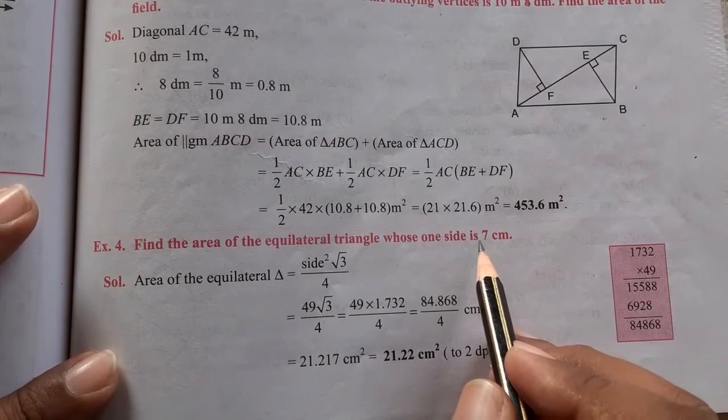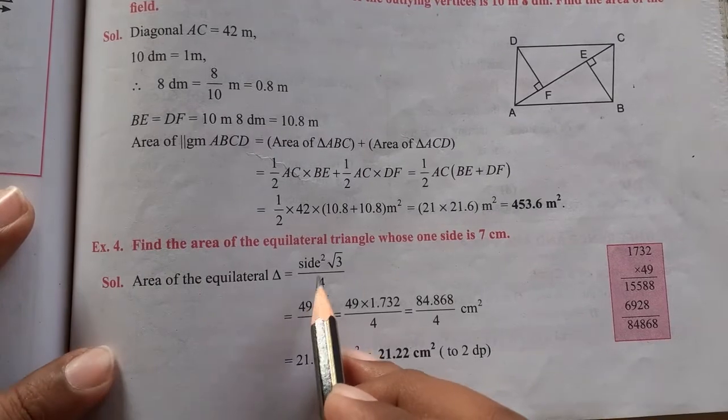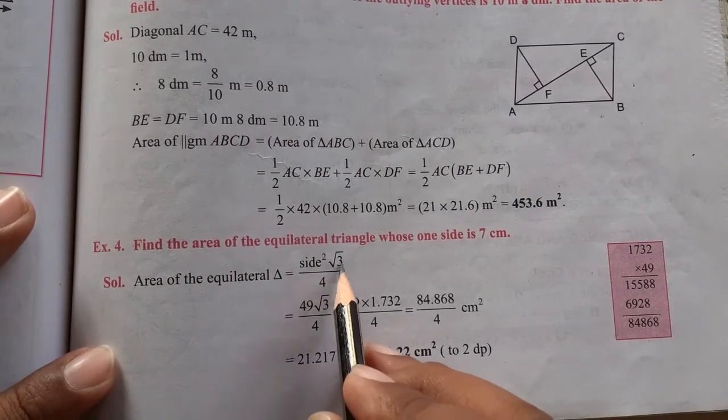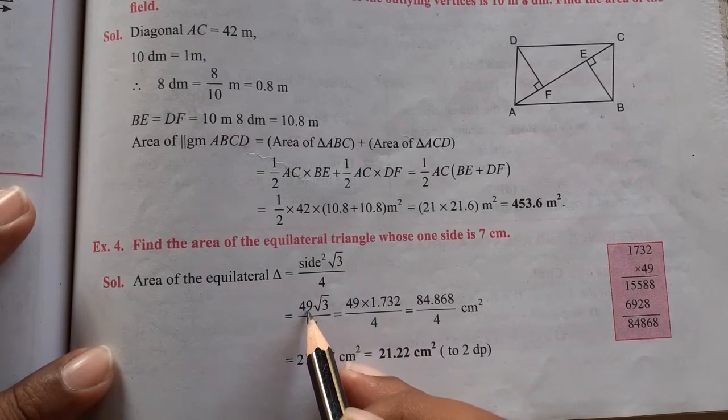So we have to apply the formula for equilateral triangle, root 3 by 4 side square. Root 3 by 4 a square, side is 7, so 7 square is 49.